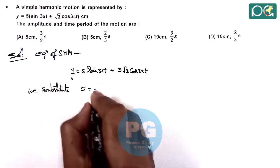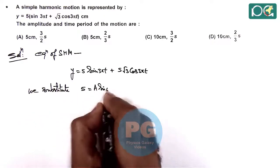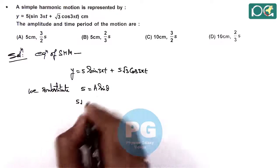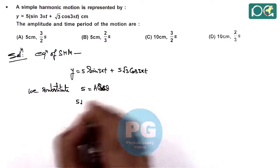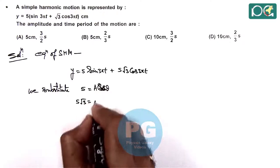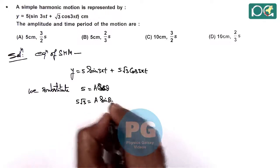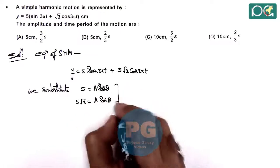5 as a cos theta and 5√3 as a sine theta.